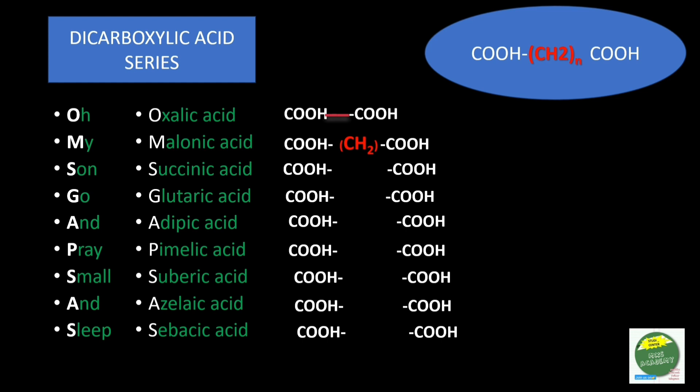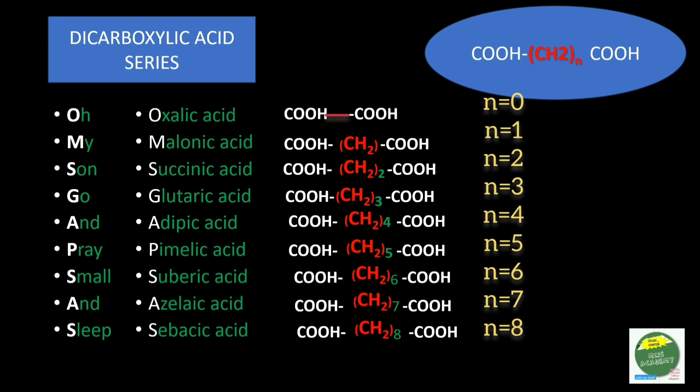Succinic acid has two. Glutaric acid has three, all the way to sebacic acid, which has eight CH2 groups. Pretty simple.